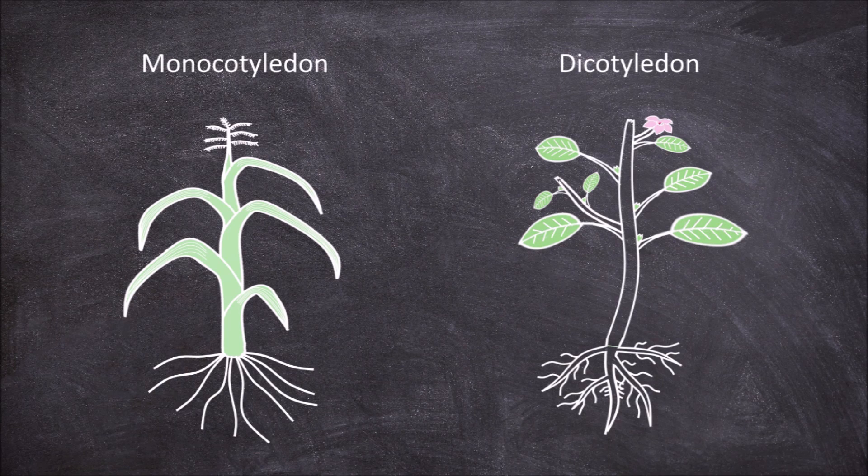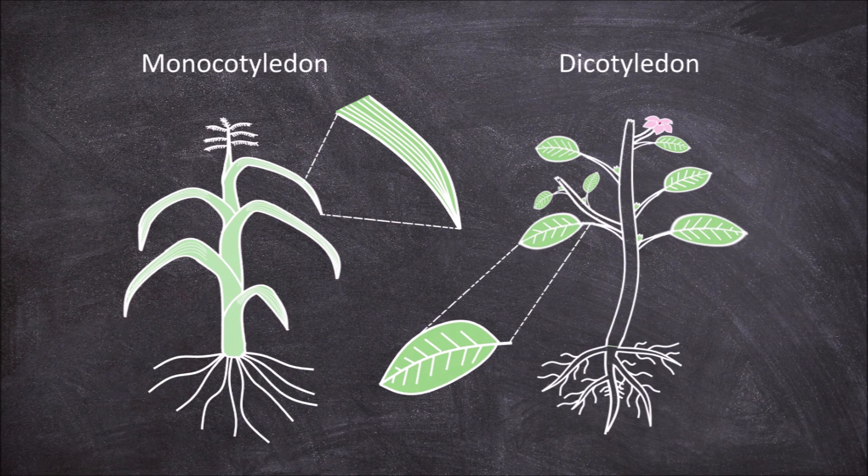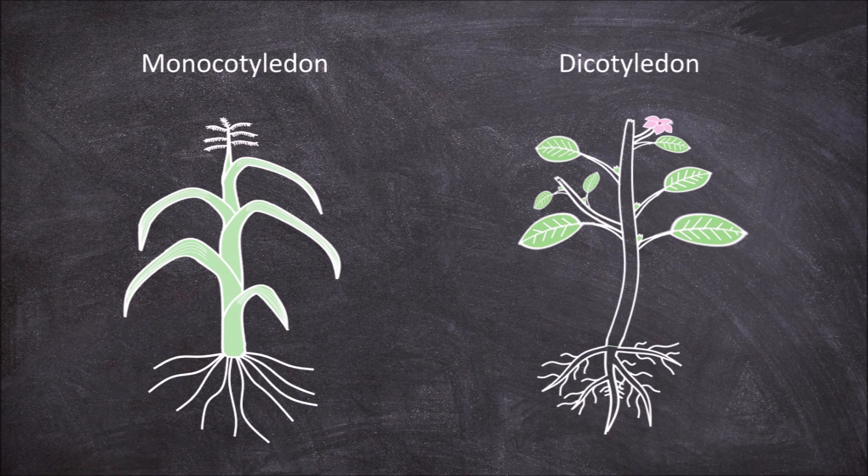There are four other main differences between the two groups. The first of these can be observed if you look at the leaves of members of each group. In monocots, the veins of the leaf are usually found in parallel lines down the leaf. In dicots, the veins in the leaf branch out.